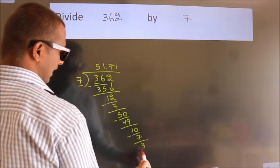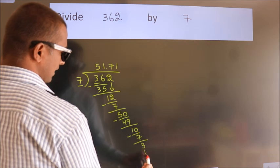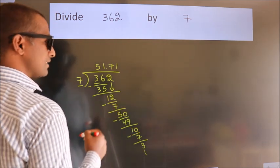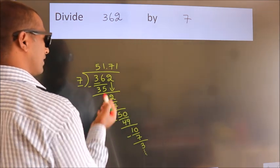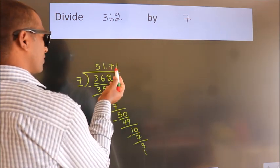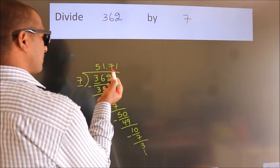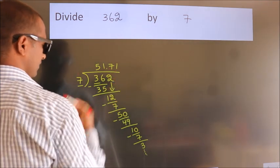The division continues, but it is enough if we do up to 2 decimal places. So this is enough.